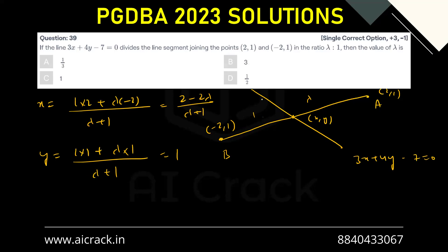We also know that these two points satisfy this line as well. So let's do that. We have 3 times (2 minus 2 lambda) divided by (lambda plus 1) plus 4 times 1 minus 7 equals 0.